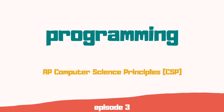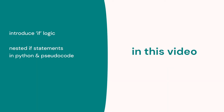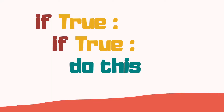This is the third video in a series on programming for the computer science principles course. In the previous video we introduced the if statement. In this video we really want to understand it, especially when it gets more complex such as nested if statements. We're going to look at some examples and also some challenges. If you want to see these explained, stay to the end of this video.